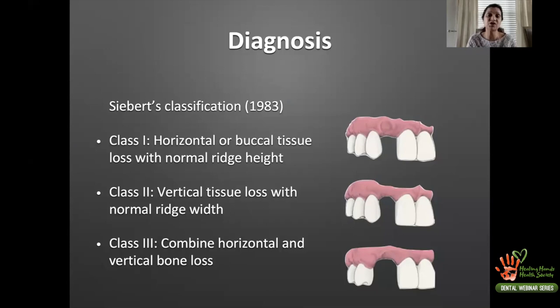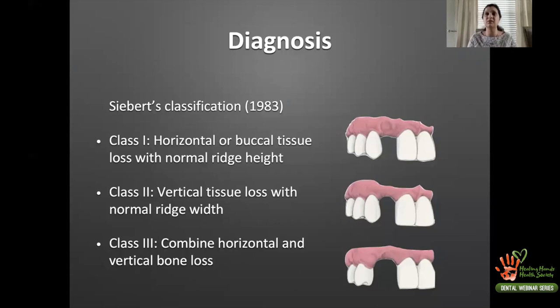For Class 3 patients, you must have a very frank conversation that multiple soft and hard tissue grafts will be needed before placing implants. This plays into the financial aspect of treatment and the patient's morbidity. Many times the patient may decide against such surgically complex treatment and prefer an alternative. These conversations must happen at the diagnostic phase — they should not come as a surprise to the patient after the fact.